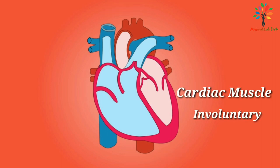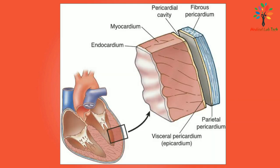The heart has specialized muscle called cardiac muscle, which is involuntary. The wall of the heart has three layers of tissue known as pericardium, myocardium, and endocardium. The pericardium is the outermost layer and is made up of two sacs. The outer sac is known as fibrous pericardium, consisting of fibrous tissue, and the inner sac is known as serous pericardium, which has a double layer of serous membrane.